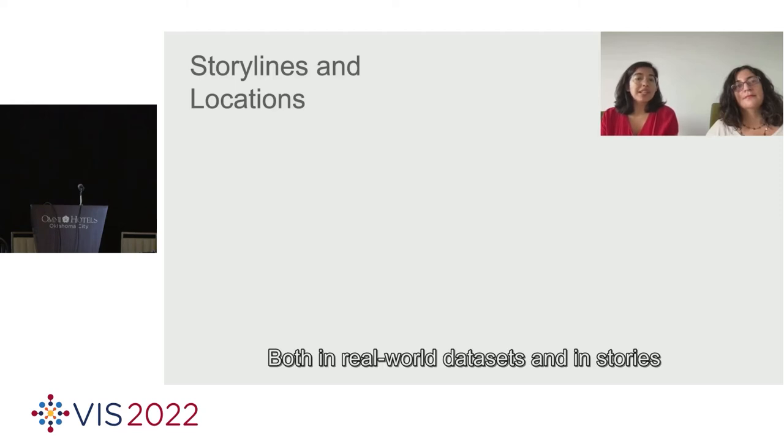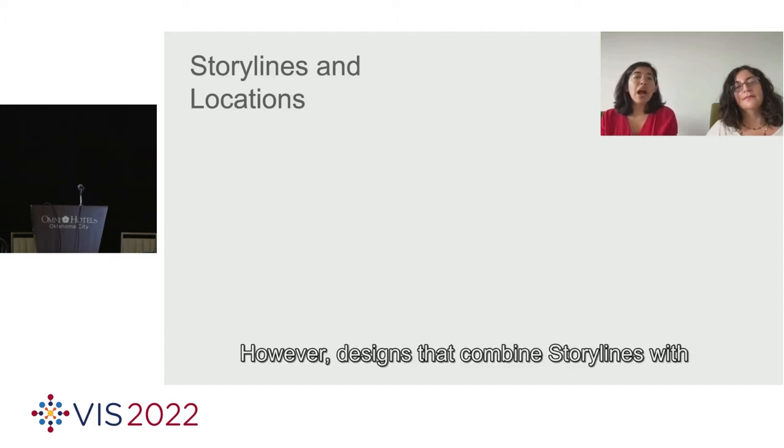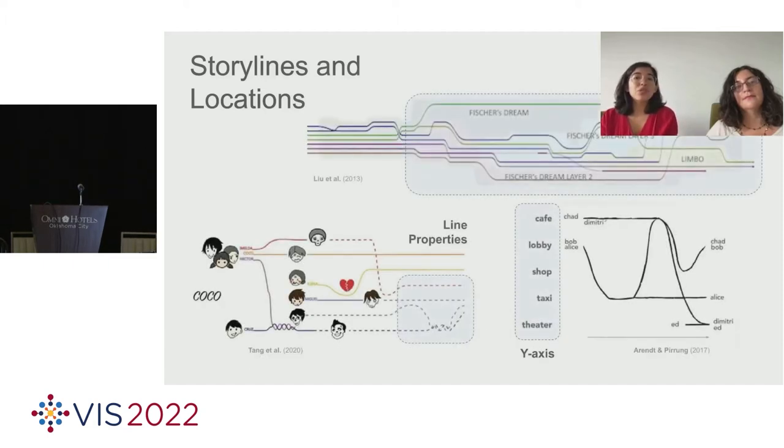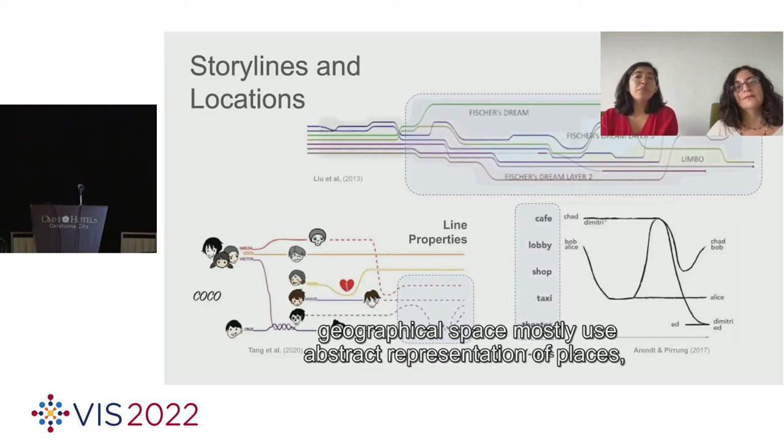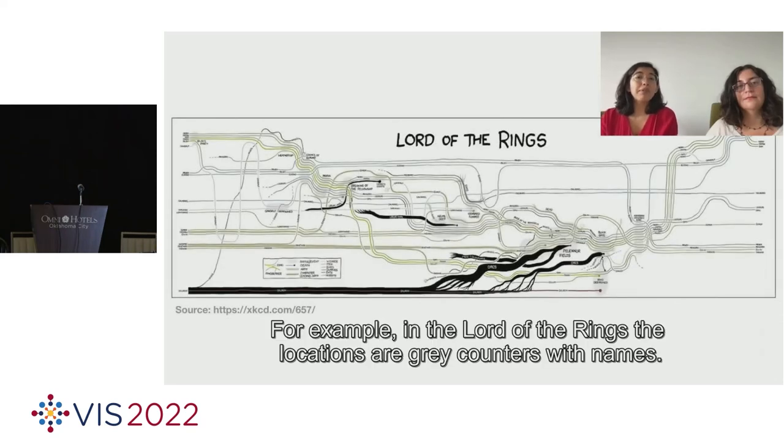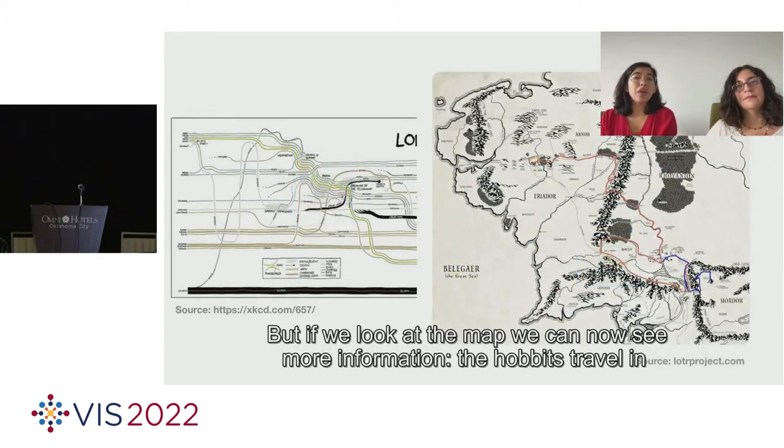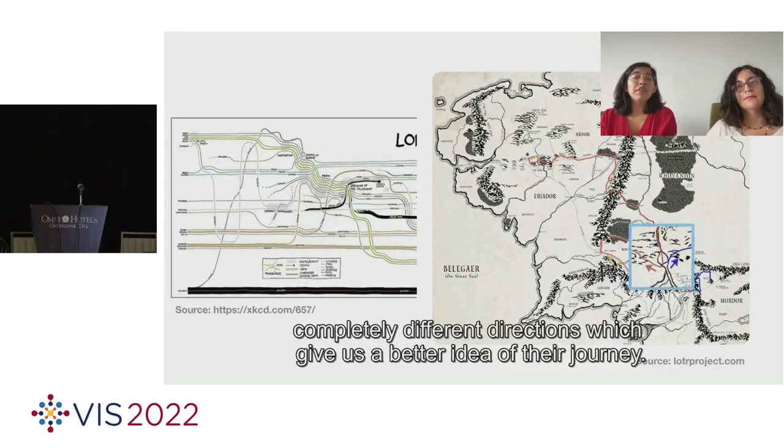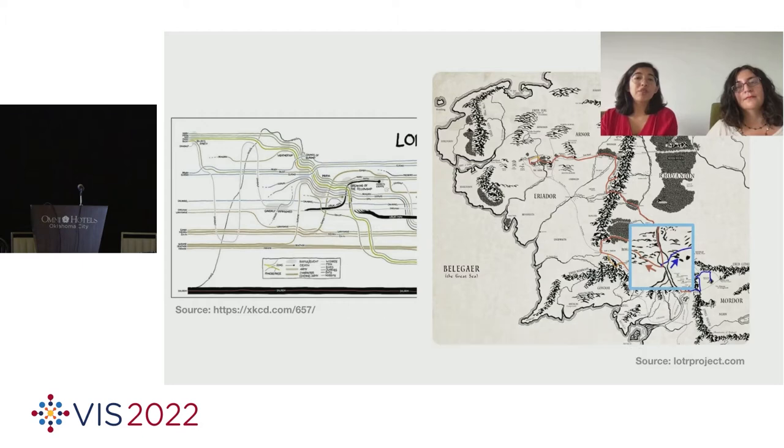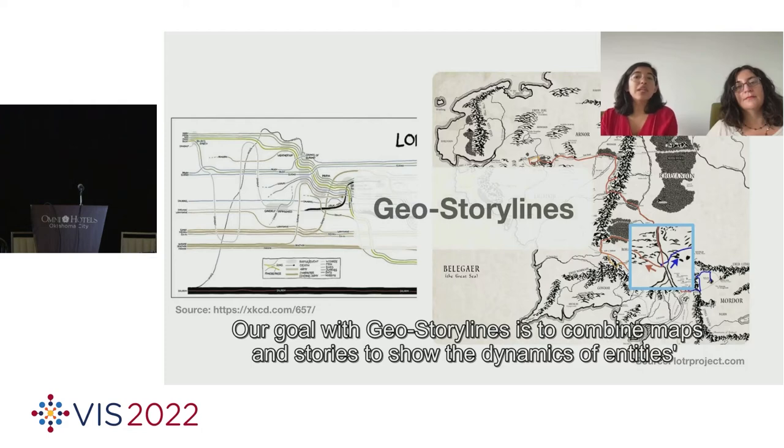Both in real-world datasets and in stories, relationships are usually linked to one or more locations. However, the designs that combine the storylines with spatial geographical space mostly use abstract representation of places, so we cannot know what is the geographical relationship between the places involved. For example, in the Lord of the Rings, the locations are great contours with names. But if we look at the map, we can now see more information. The Hobbits travel in completely different directions, which gives us a better idea of their journey.